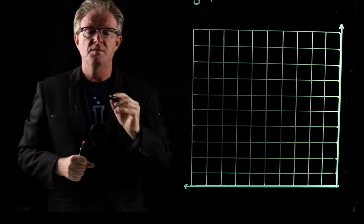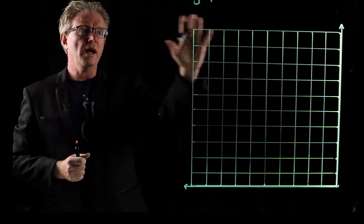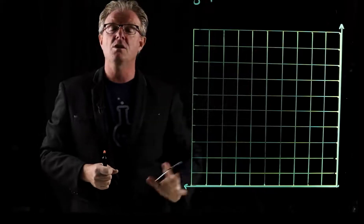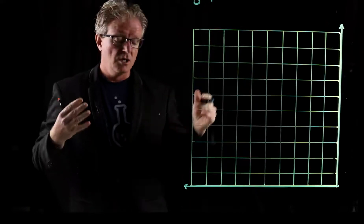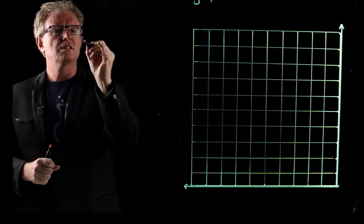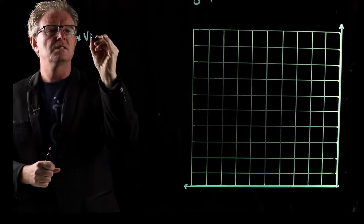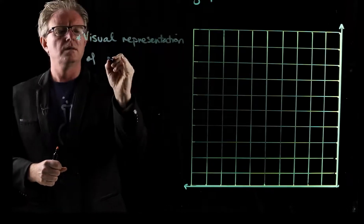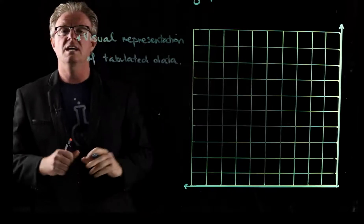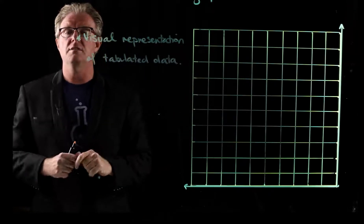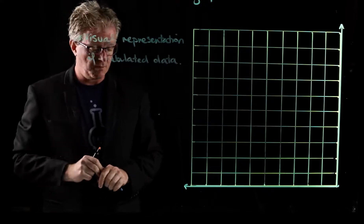Experimental data exists in a table and a graph is a way in which we can visualize that data and we can see trends. So the first thing is it's a visual representation of your tabulated data. It's the data that you collect when you're doing a science experiment.